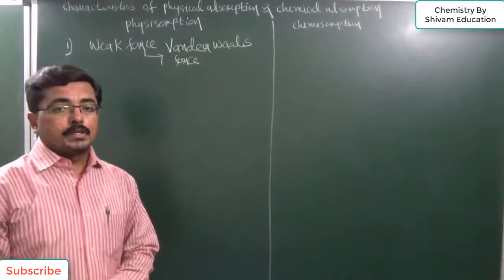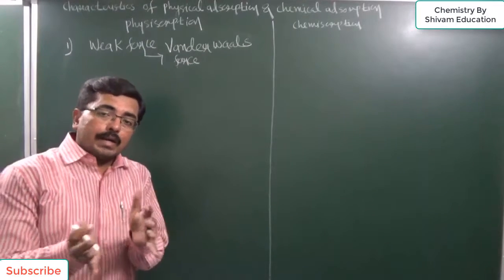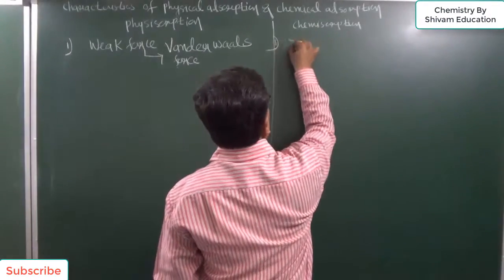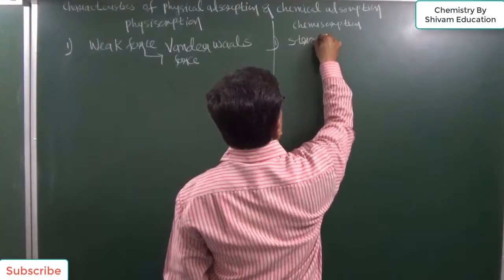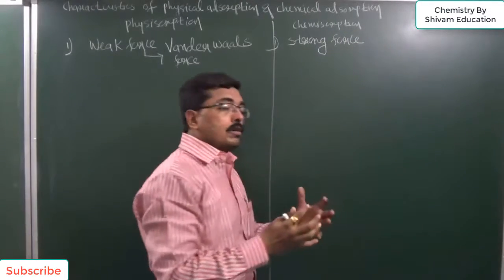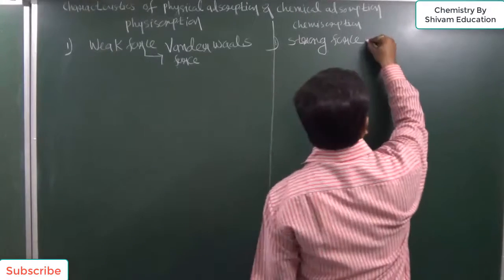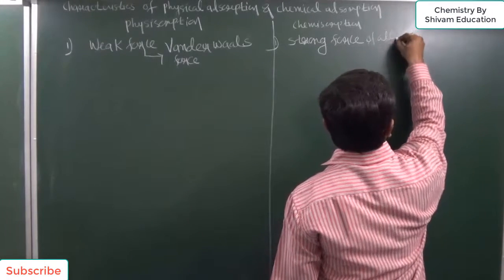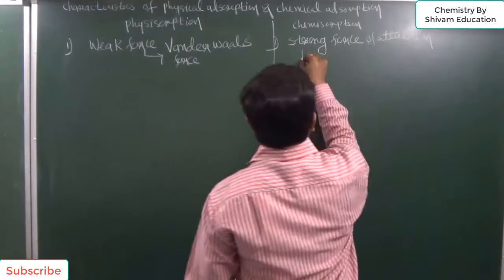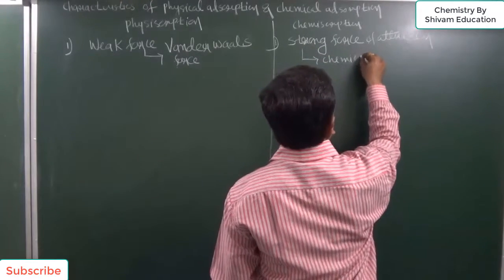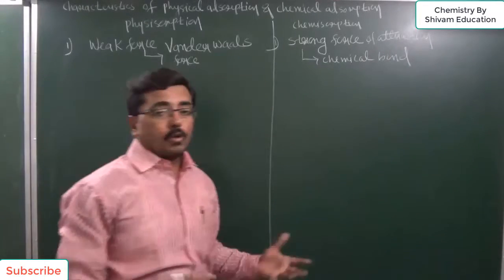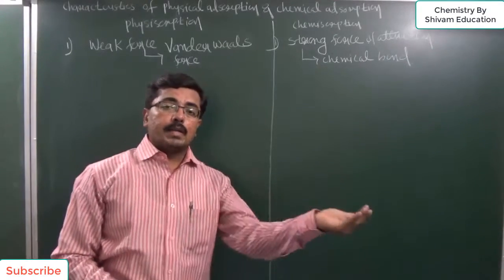While in chemical adsorption, between adsorbent and adsorbate there is a strong force of attraction. This strong force of attraction is one type of chemical bond — it may be an ionic bond or a covalent bond formed between adsorbent and adsorbate.